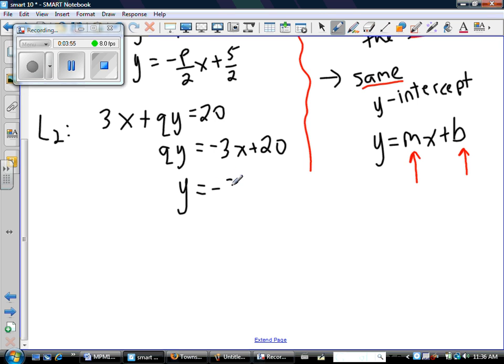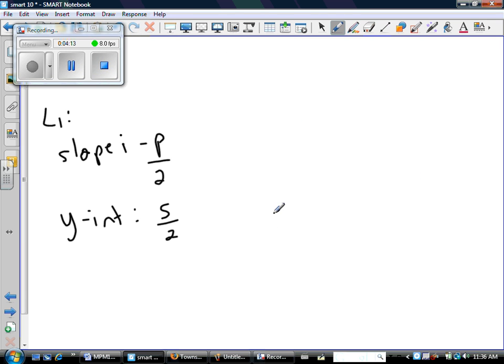Hoping, of course, that q doesn't end up being zero, because then I'd be breaking some sort of fundamental rule here. But let's pretend. So there's line two. Slope is negative 3 over q. Y-intercept is 20 over q. So let's copy that on this page.